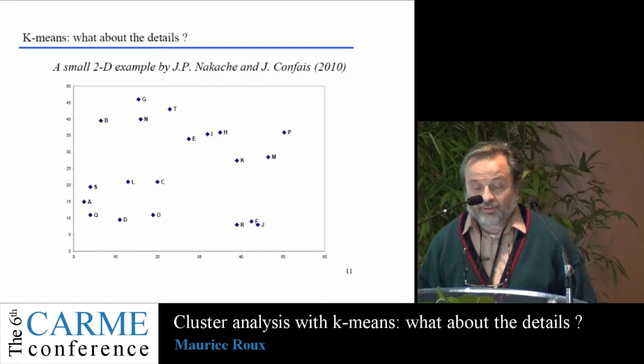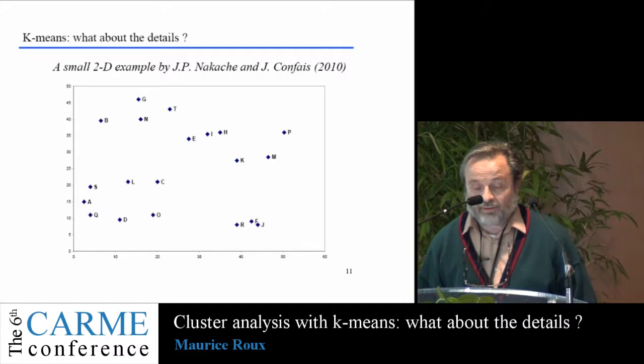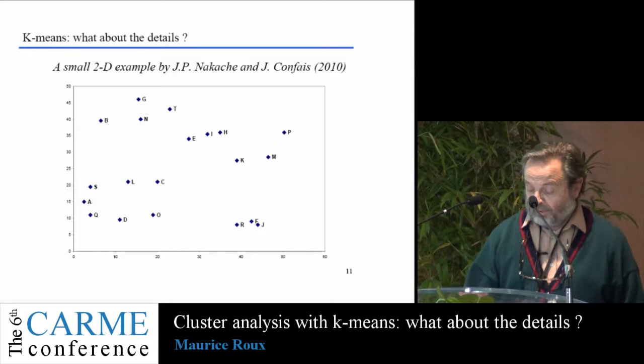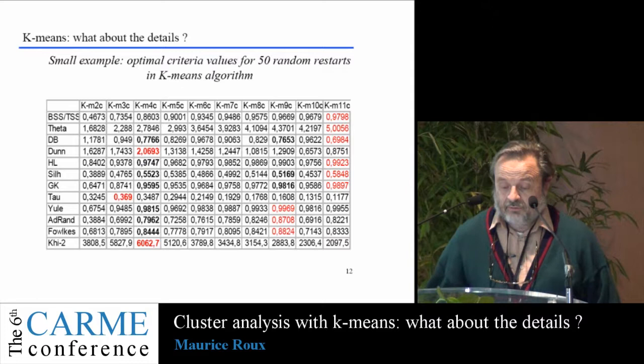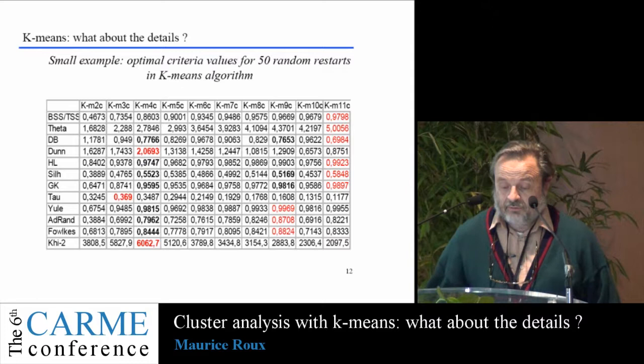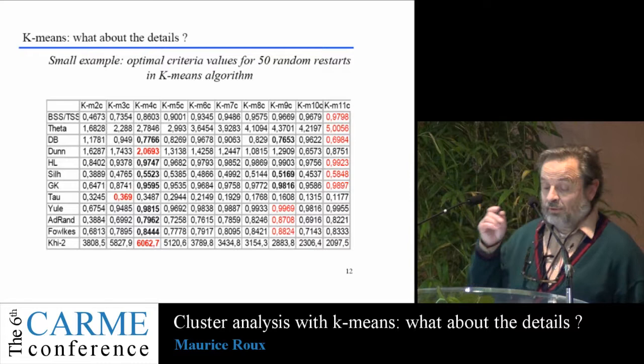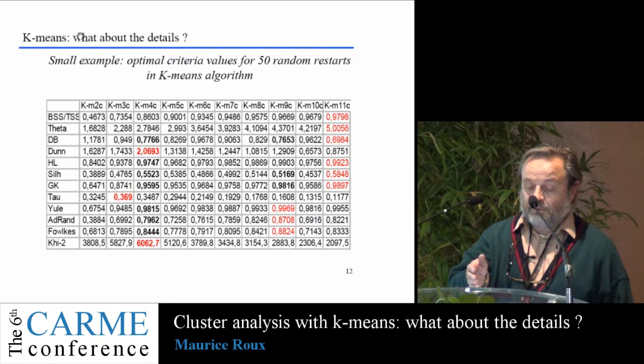I will just show here the example by Nakash and Confe: 20 points in a two-dimensional space. This is a very easy case. The results of K-means are presented where the columns of this table represent the number of clusters — the first column is with two clusters, then three clusters, and so on.